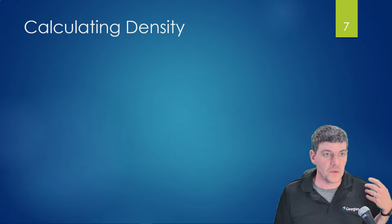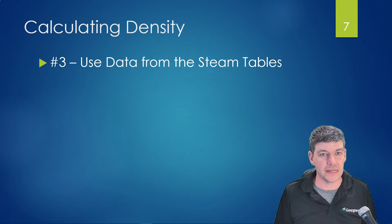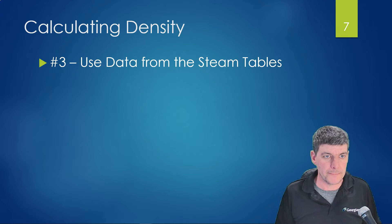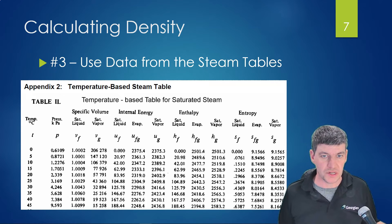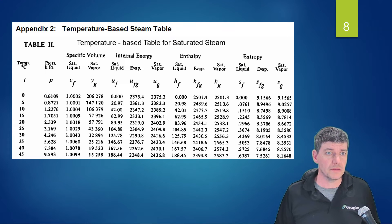We have a new approach to introduce — how do we find density when we don't have that table available? The tool available to us in our academic supplement is our steam tables, and we can use data from the steam tables to calculate density, although it's a little more complicated than the previous methods. Here's an example: Table 2 is our saturated steam table, temperature-based, and inside it we have data related to saturated water and saturated steam.